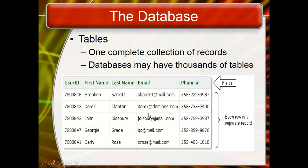A table has a specified number of columns but can have any number of rows. The columns are fixed when you create the table, but records may be thousands or millions. When you generate a table, you must think about how many columns or attributes should be there, because those columns will be fixed; however, records are not fixed — you may add them at any time. Each table in a database holds data about a different but related subject, and all data should be related within a table, field, or record.